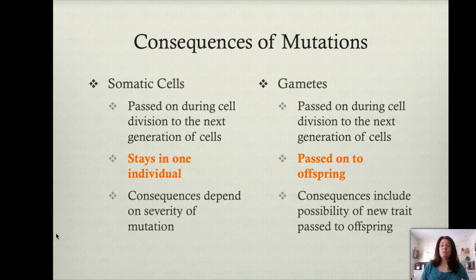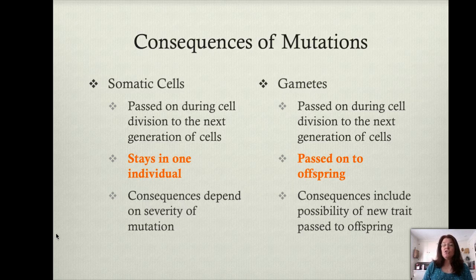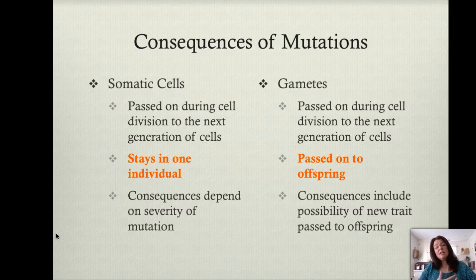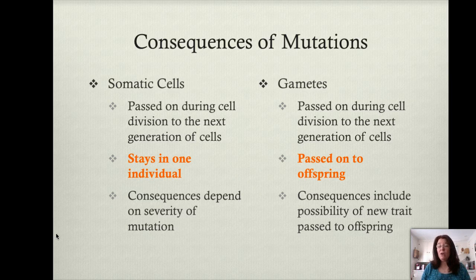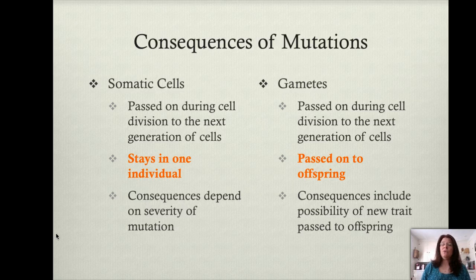If we look at an organism like a human being, we can describe two very different cell types: somatic cells and gametes. Somatic cells are the cells that make up the body proper — the cells that make up things like an organism's skin and the organs inside, the liver, the kidney, and so on. Somatic cells are the cells that divide and grow with you as an organism, that repair themselves when they get damaged, but these are cells that are going to live with you as an organism and then die with you when you die.